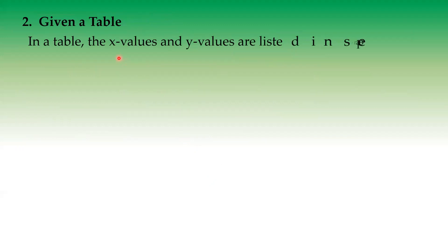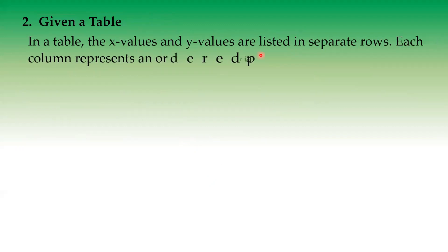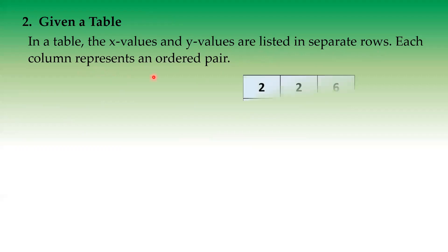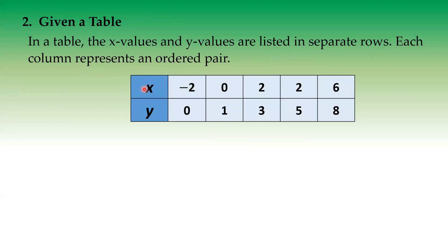Number two, given a table. In a table, the x values and y values are listed in separate rows, and each column represents an ordered pair. So we have a row for x values: negative two, zero, two, two, and six. Another row for y values: zero, one, three, five, and eight. So the ordered pairs are: negative two–zero, zero–one, two–three, two–five, and six–eight.